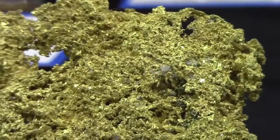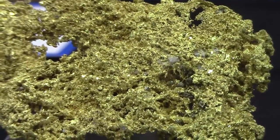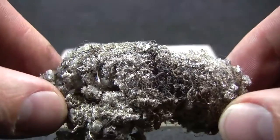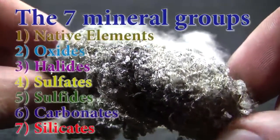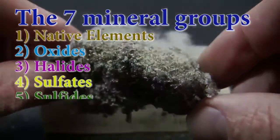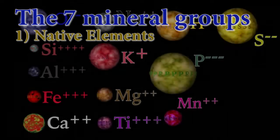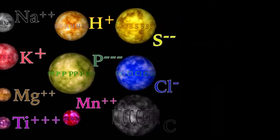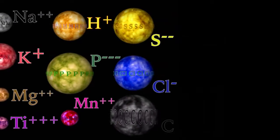Welcome back mineralogy fans! We covered most of the native element minerals that we are going to look at in the precious metals, but in this, our very last episode on basic mineral identification, we examine what comes of sulfur and carbon, the 13th and 15th most common elements in the earth's crust respectively.